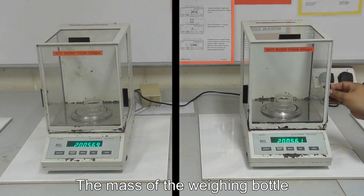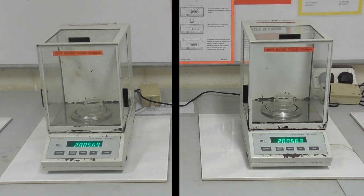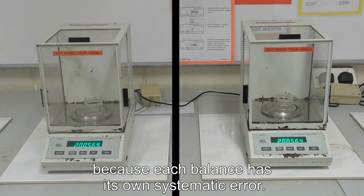The mass of the weighing bottle, measured by two different balances, are slightly different because each balance has its own systematic error.